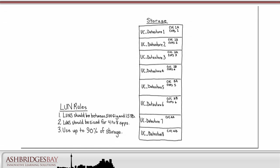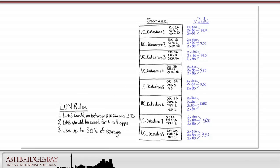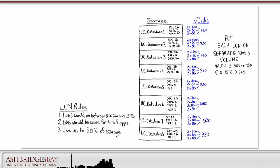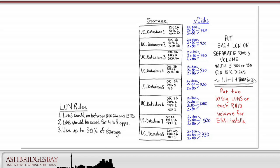Next, we'll distribute our CUPS servers and our CUCM call processing servers, and finally the remaining servers. If we add up the vDiscs on each LUN, we get 920GB for all of the LUNs except Datastore 6, which is a little larger. While we only have 3 apps per LUN, we're going to go with this so as not to double up the connection hard drives, and it gives us some room for additional servers if need be. We'll put each LUN on a separate RAID 5 volume with either 5 300GB 15k disks or 5 450GB 15k disks, giving us about 1.1 or 1.4 terabytes respectively. We'll put two 10GB LUNs on each RAID volume for our ESXi installs.